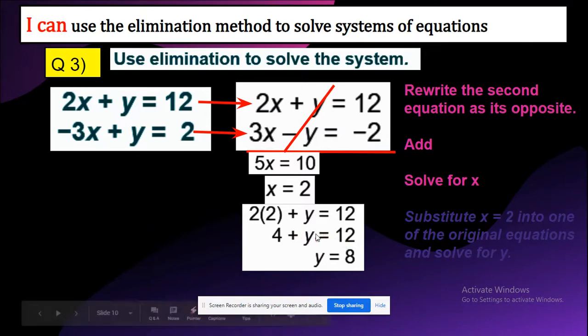Now you want to leave y alone, so you can subtract 4 from both sides. 4 minus 4 is 0, you can cancel that. Then 12 minus 4, and you're going to divide both sides by 1, so y equals 8.